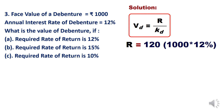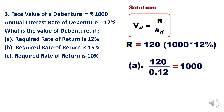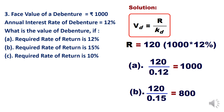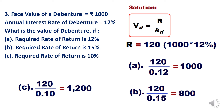Kd changes as per each situation. In situation (a): Vd = 120 / 0.12 = 1000 rupees. In situation (b): Kd = 0.15, so Vd = 120 / 0.15 = 800 rupees. In situation (c): Kd = 0.10, so Vd = 120 / 0.10 = 1200 rupees. This is how we calculate the bond value under each scenario.